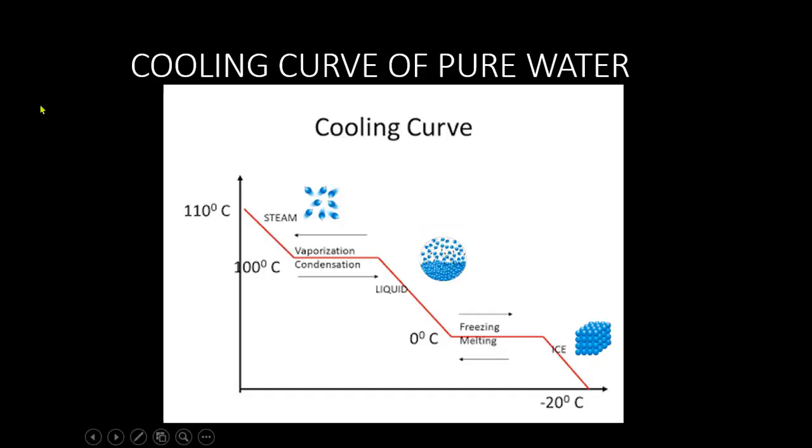Similarly, if we start with steam, the gas can be cooled to form a cooling curve. So when the gas is cooled, the particles are going to lose kinetic energy and the temperature will begin to fall with time. The particles start to get more attracted to each other. And then at this point here, energy is released and it turns into a liquid. So at this point here is where we have condensation taking place.